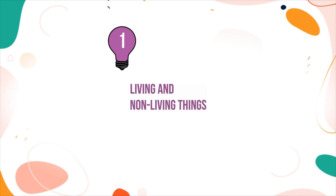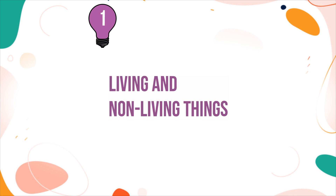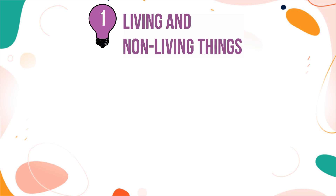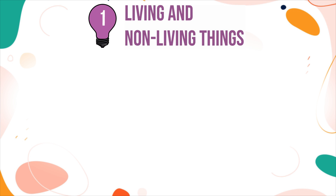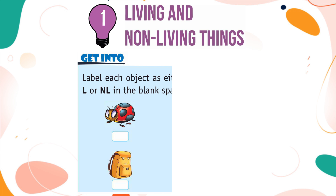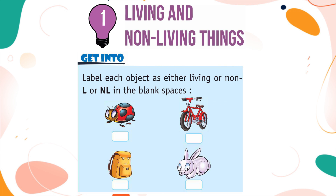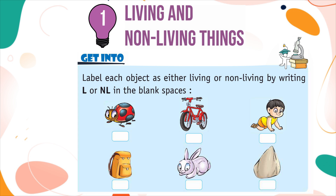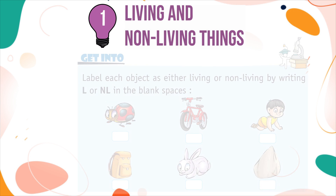Chapter 1: Living and Non-Living Things. Get into it — label each object as either living or non-living by writing L or NL in the blank spaces.